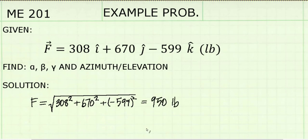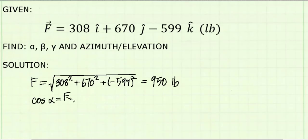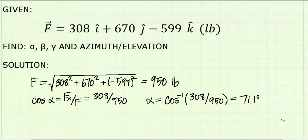Using the Pythagorean Theorem, we get 950 pounds. The cosine of alpha is the x component of the force divided by the magnitude. We can rearrange this equation to solve for alpha. And I get alpha is 71.1 degrees.